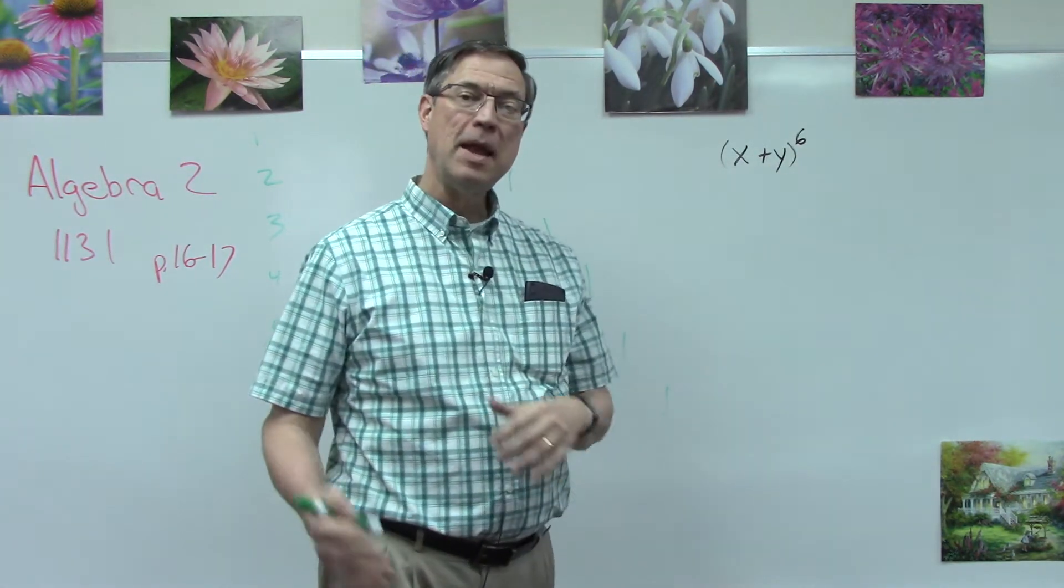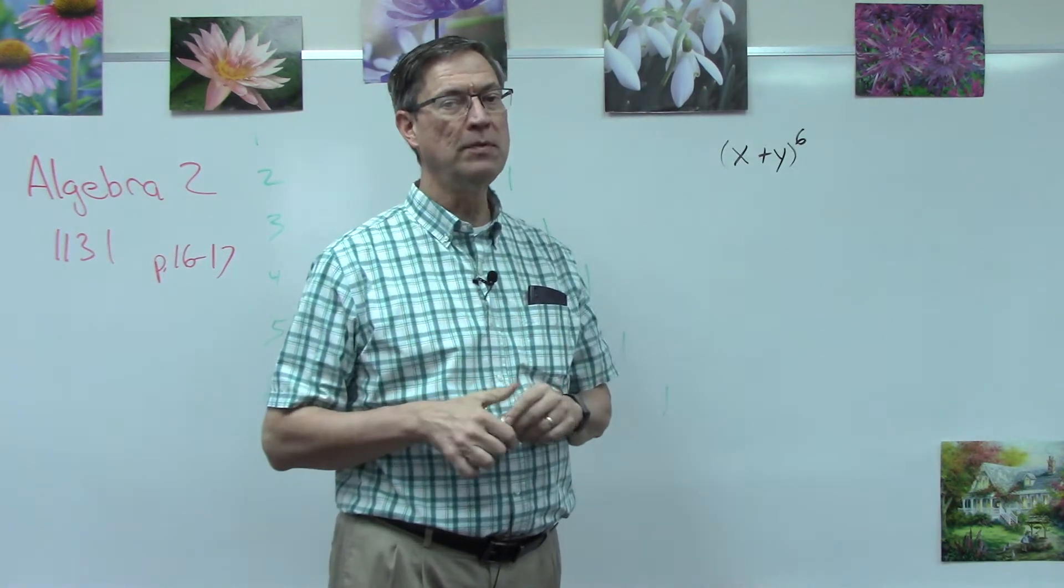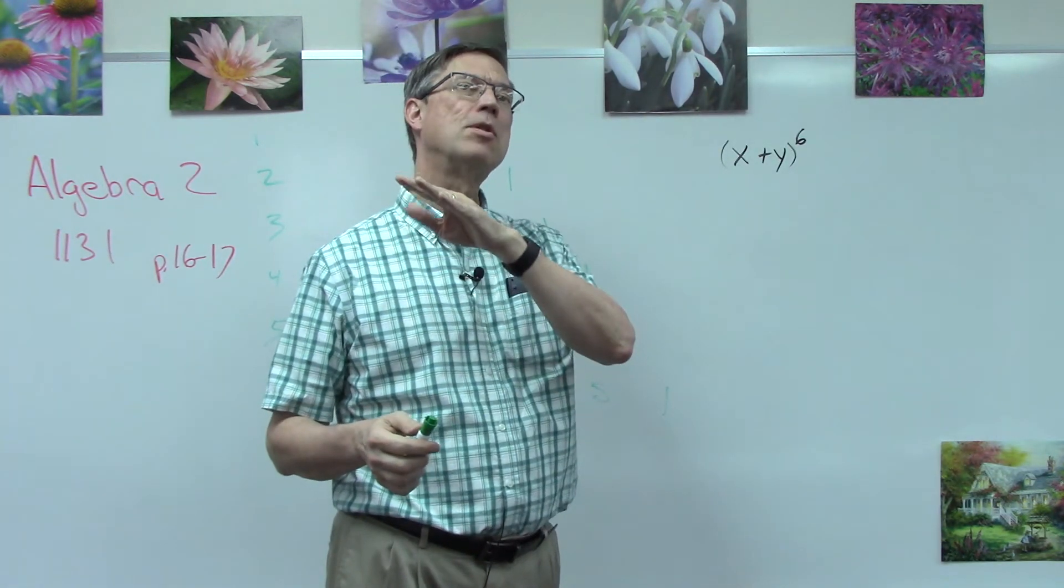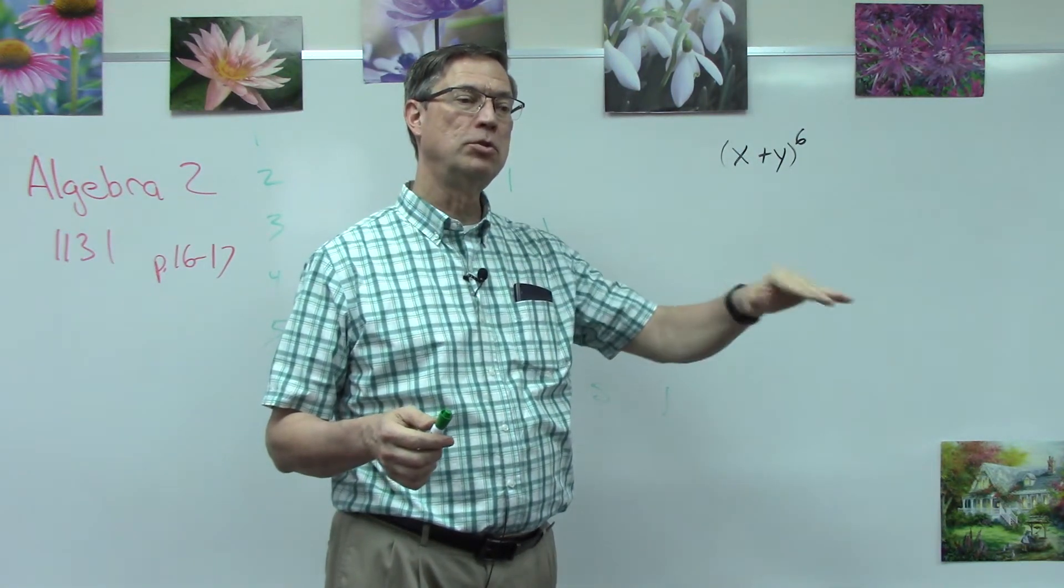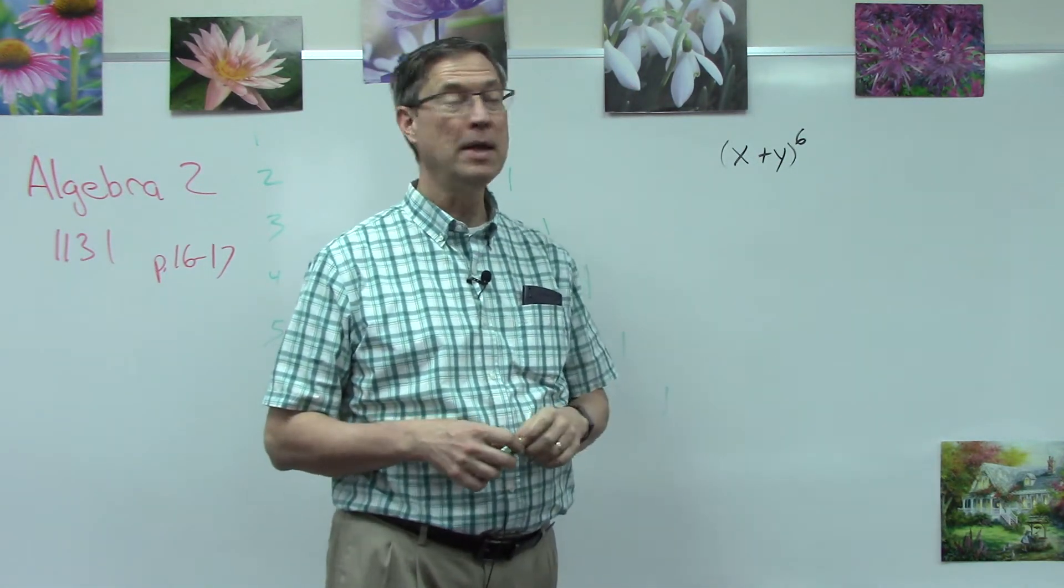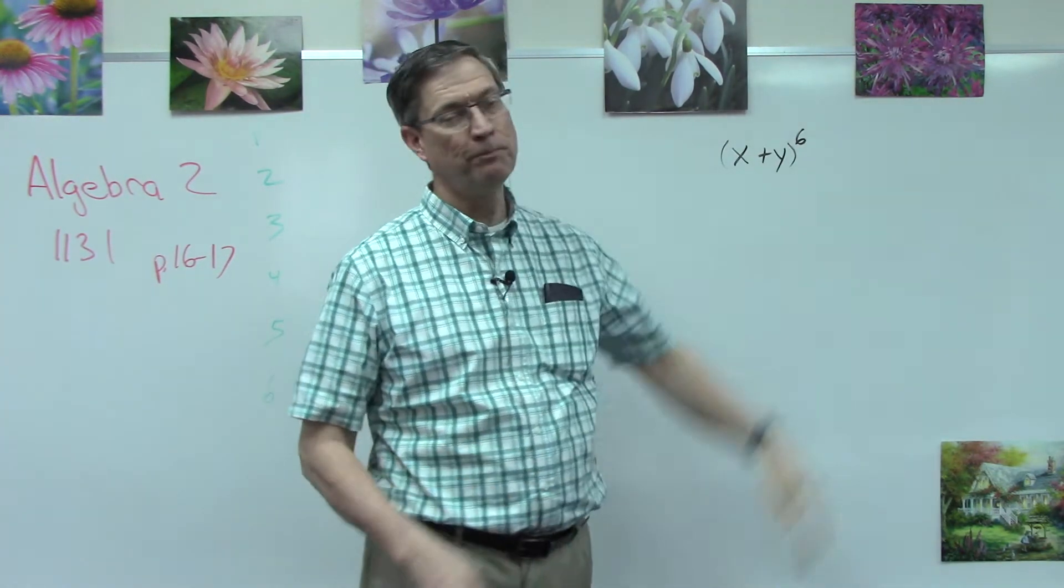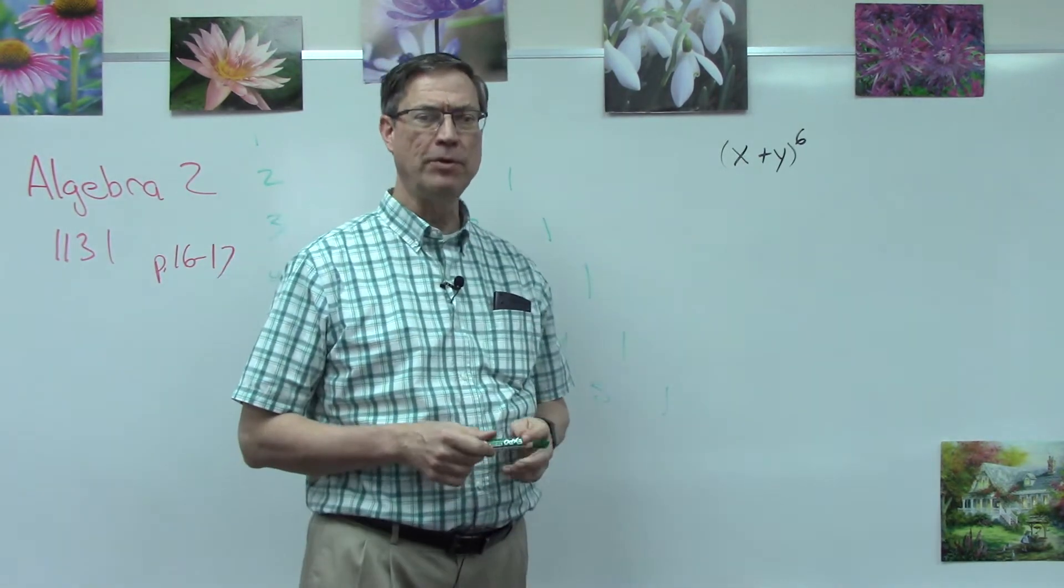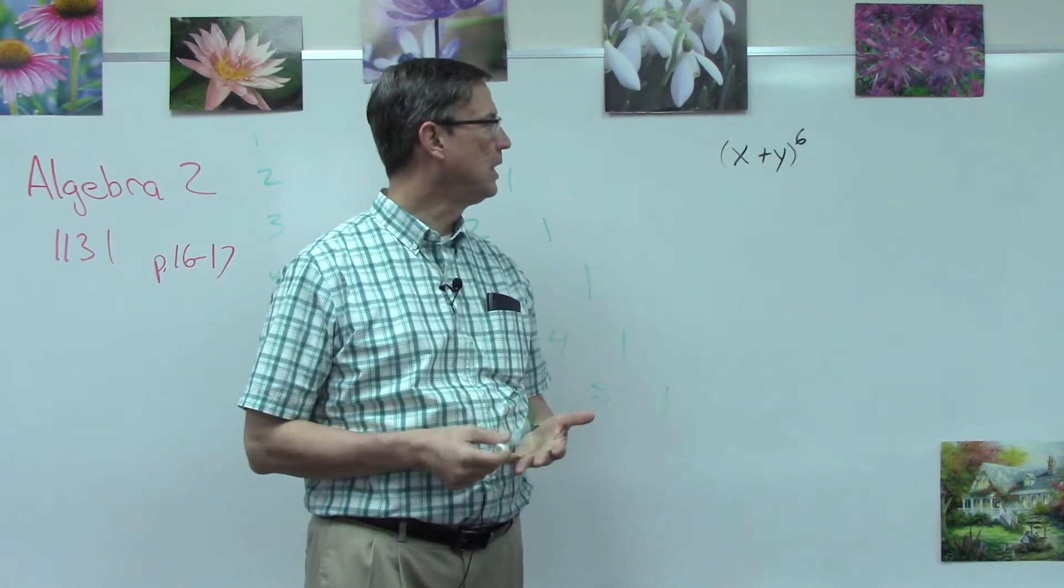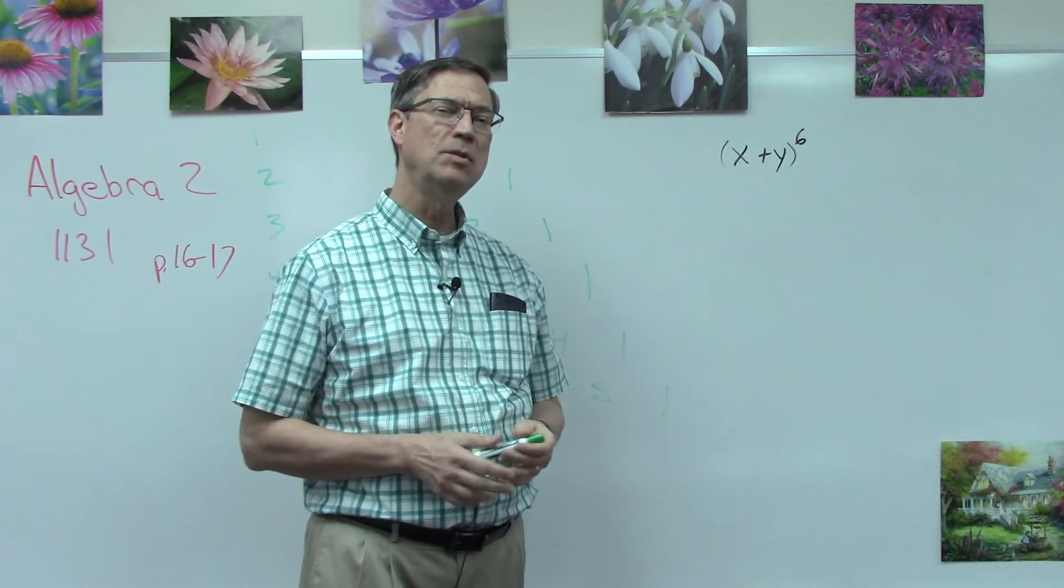The x's start off at x to the fifth, then fourth, third, two, one, and then none. The y has an increasing exponent. But what we didn't figure out in the previous lesson is what the numbers would be in front of those, and is there an easy way to do that? Well, Pascal came up with what looks like a Christmas tree here.